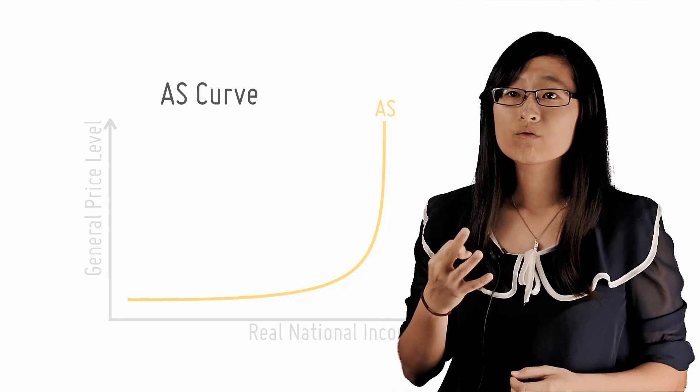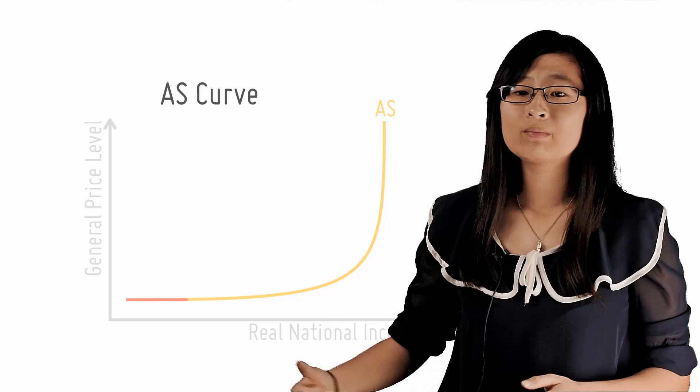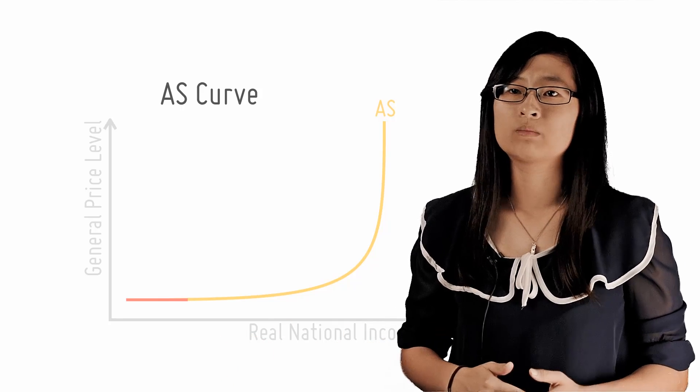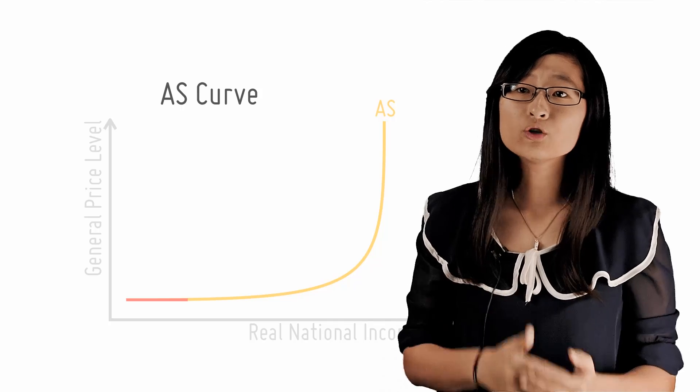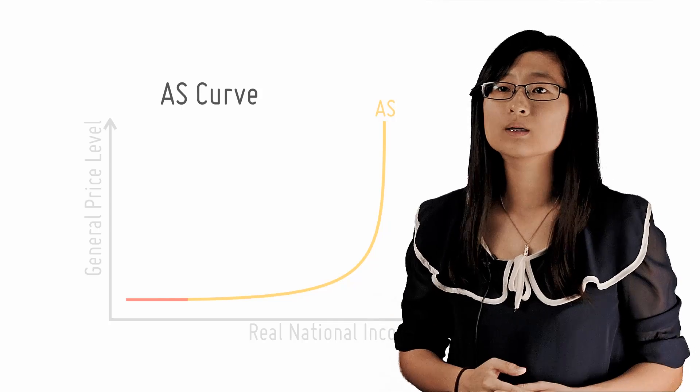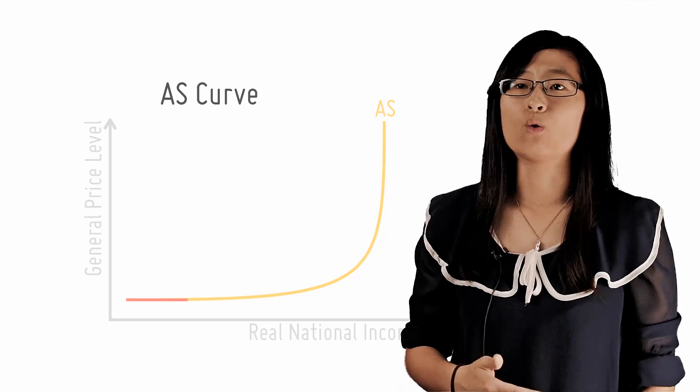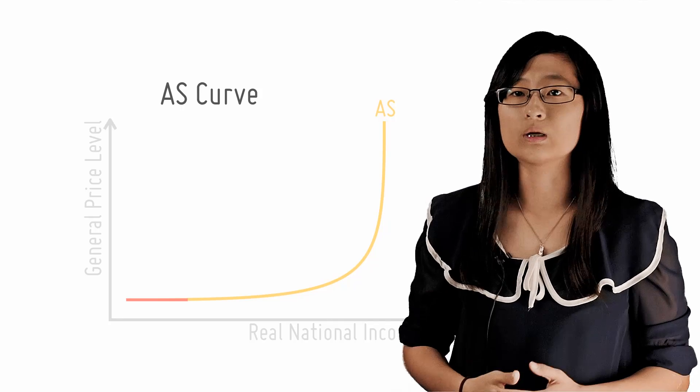As you can see, there are three distinct regions. On the extreme left, we have the horizontal Keynesian range. The national output is very low over this range, meaning resources are largely unutilized or underutilized. This is commonly seen during recessions when aggregate demand is very low and there is significant unemployment in the economy.